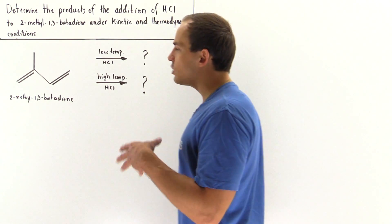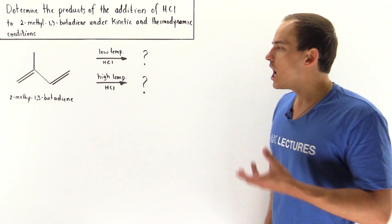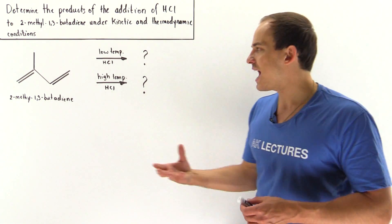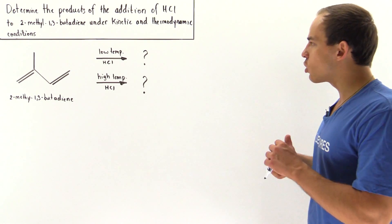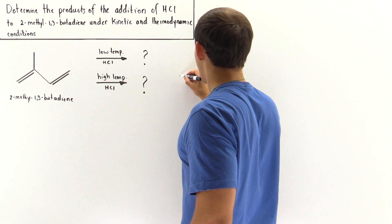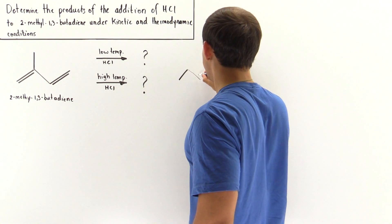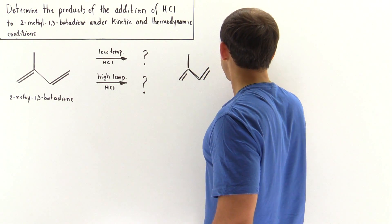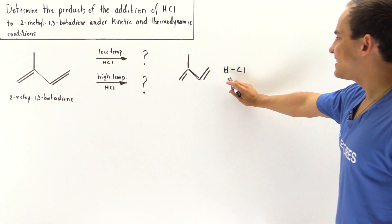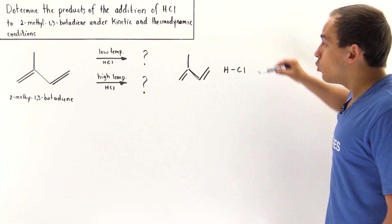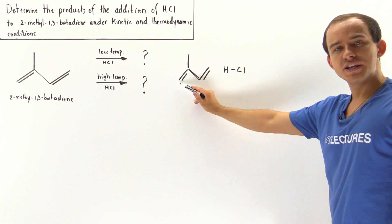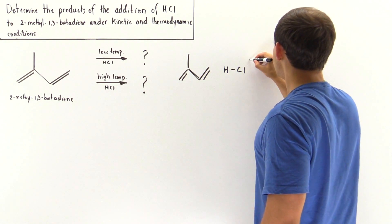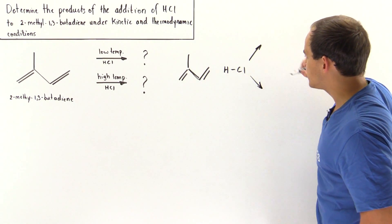Let's begin by describing what the intermediate carbocation of this addition reaction will look like. In both cases, the intermediate resonance-stabilized carbocation will be exactly the same. We have 2-methyl-1,3-butadiene and the addition of HCl. The question is where exactly will this H end up — will it go onto this carbon or this carbon? That is, will this pi bond take the H, or will this pi bond take the H? Let's break down our reaction into two different potential pathways.